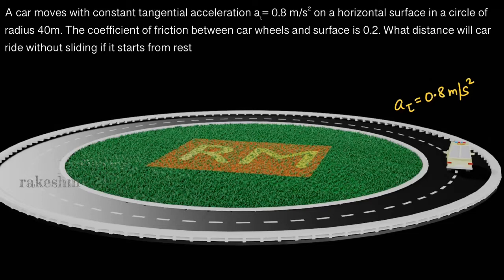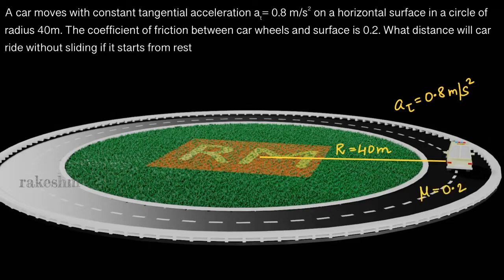The car is moving in a circle of radius 40 meters. The coefficient of friction between the car wheels and the surface is 0.2, so mu equals 0.2. The question asks: if this car starts from rest, what distance will it cover without sliding?